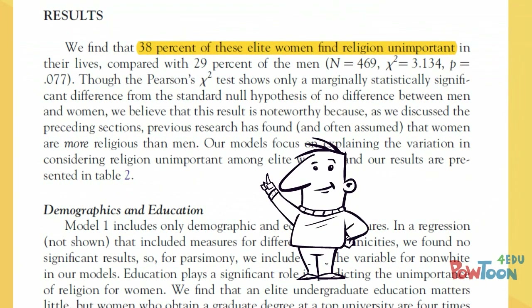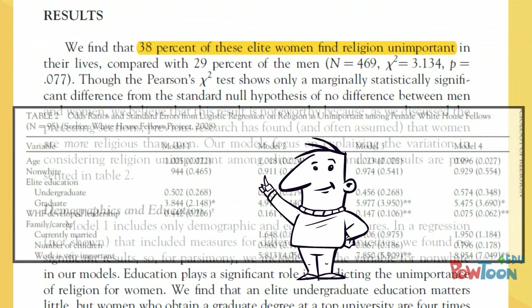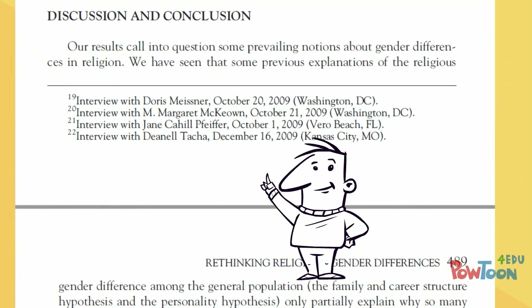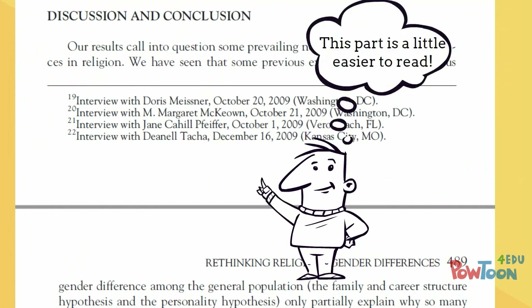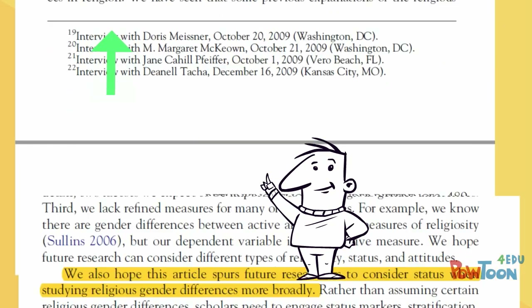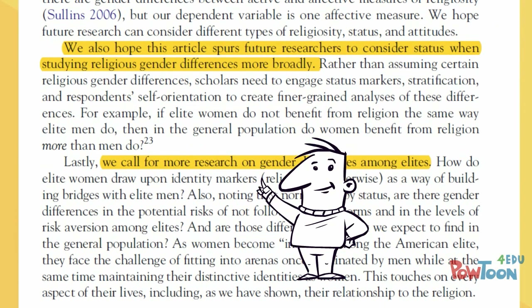After analyzing the results, the researchers present their findings in any related charts or graphs. The discussion section and the conclusion in research articles are extremely important — they focus on interpreting and explaining the results. Authors will use these sections to offer practical suggestions for those working in relevant fields, and they are also useful for identifying ideas for future research.